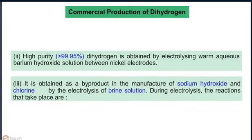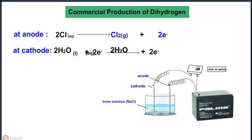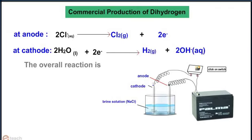Method 3: Dihydrogen is obtained as a by-product in the manufacture of sodium hydroxide and chlorine by the electrolysis of brine solution. At the anode: 2Cl⁻(aq) → Cl₂(g) + 2e⁻. At the cathode: 2H₂O(l) + 2e⁻ → H₂(g) + 2OH⁻(aq). The overall reaction is as shown.